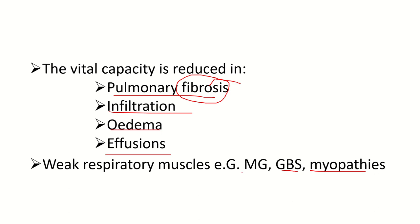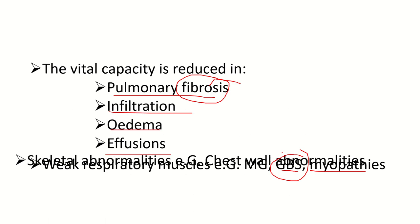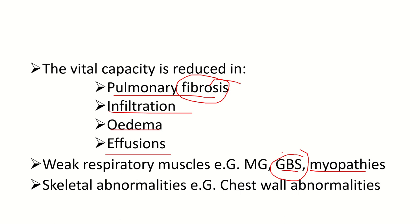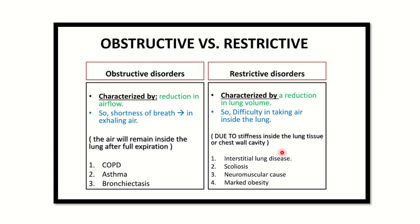In Guillain-Barré syndrome, ascending paralysis occurs — it starts in the lower limbs and gradually ascends upward. When it involves the respiratory muscles, specifically the diaphragm, it becomes very difficult for the patient to breathe. The patient can die from paralysis of the respiratory muscles. Skeletal abnormalities such as chest wall abnormalities also reduce vital capacity.